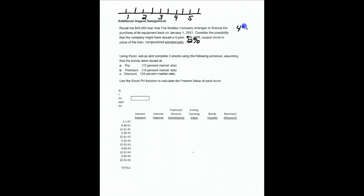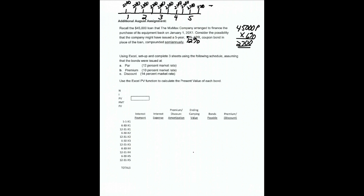If we think $45,000 is the principal, the six-month rate is 6%. So every six months, we are promising to pay $2,700 to our bondholders. We have 10 payments of $2,700 every six months, and then at the end of the life of the bond, there will be this big $45,000 principal payment.